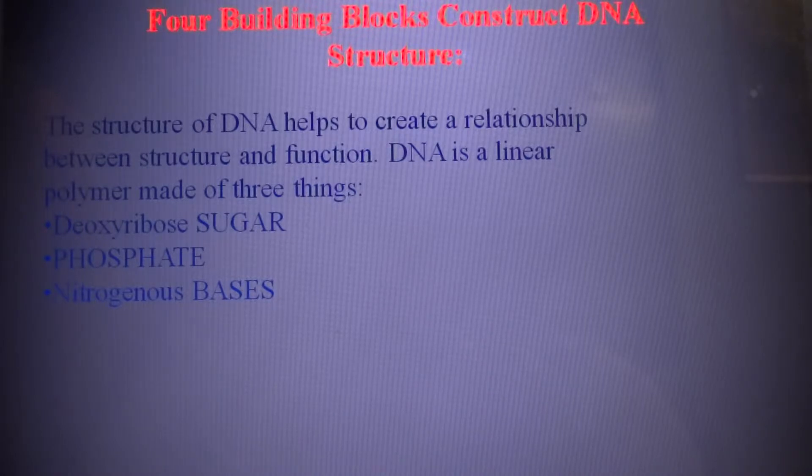Joined to each deoxyribose is one of four possible bases: adenine, cytosine, guanine, and thymine. We know that adenine and guanine are the purine bases, and cytosine and thymine are the pyrimidine bases.